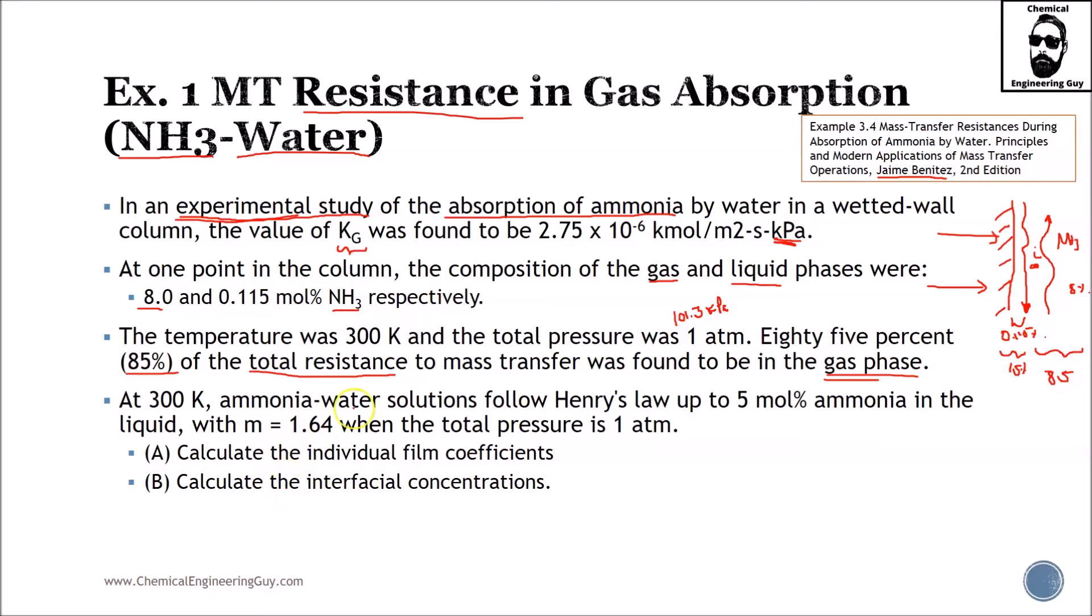At 300 K, ammonia-water solutions follow Henry's law all the way to 5% ammonia. We need to ensure that in the interface we don't have a concentration greater than 5 mole%. If this is not true, then we will not be able to assume Henry's law. Maybe between 5 and 7% it's still fine, but greater than 7% will not be convenient.